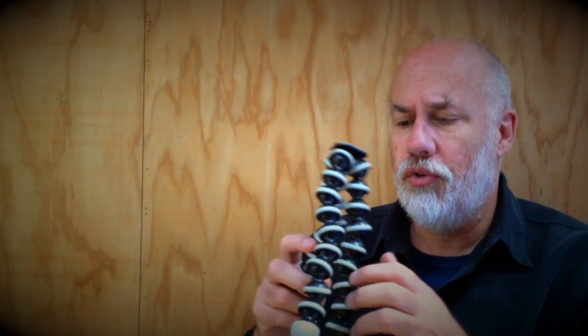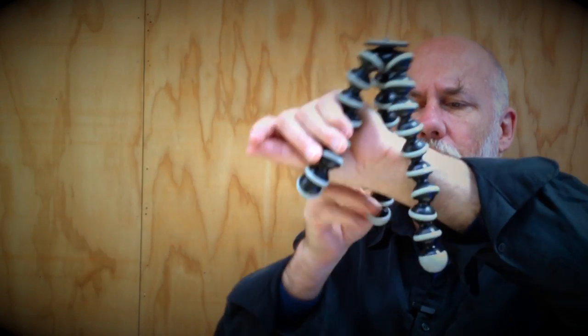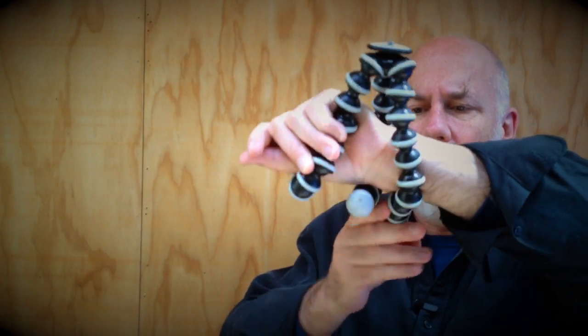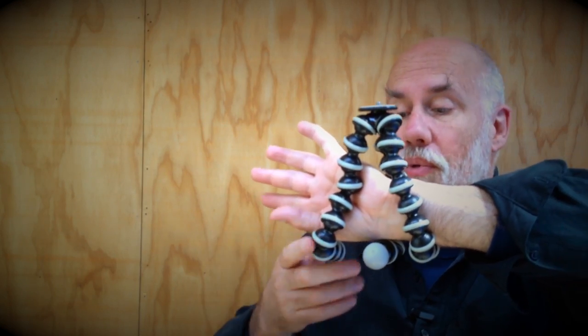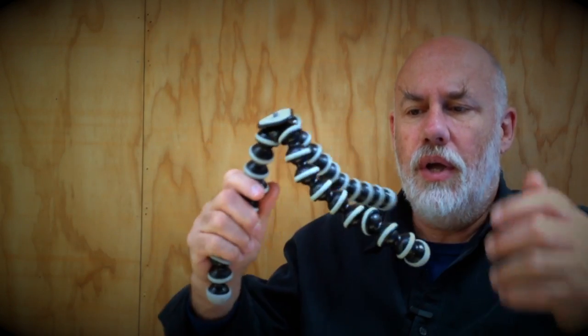Gorillapods are really useful. This is a full-size Gorillapod, and you can get it to bend around things so that it can stick onto something like the back of a chair, or you can put it on a table. That will hold your camera up, and these are cheap as chips. They go kind of anywhere, and they're great.